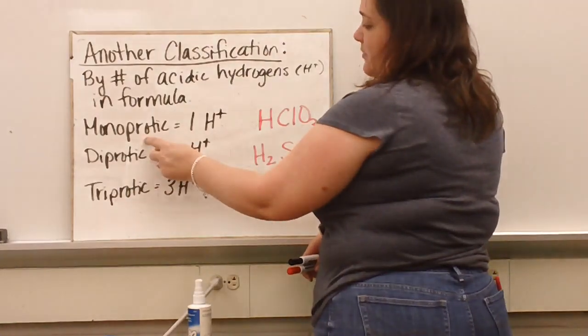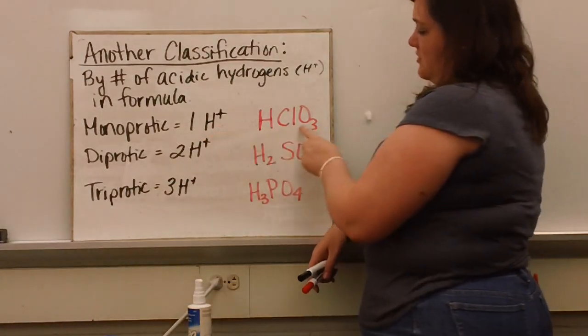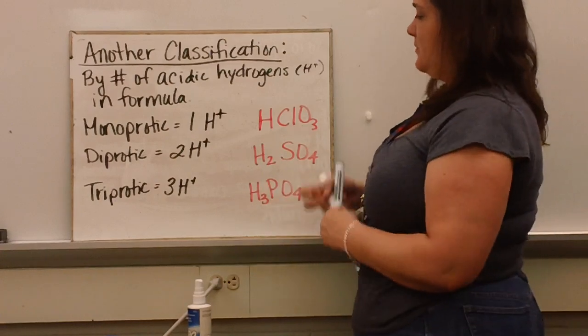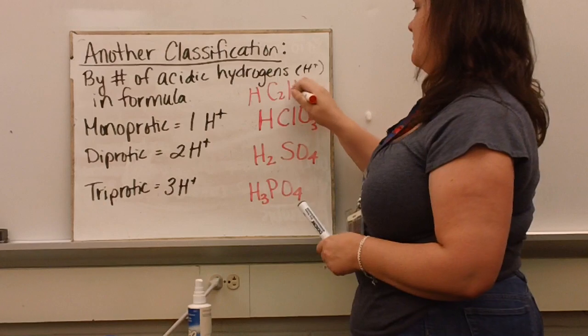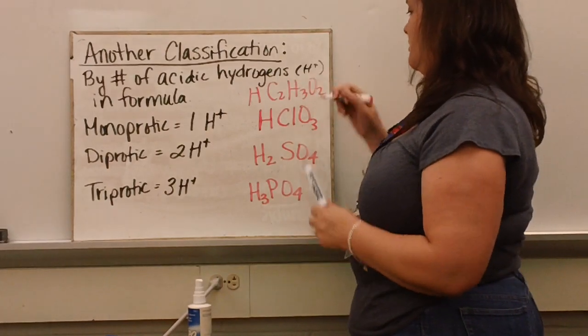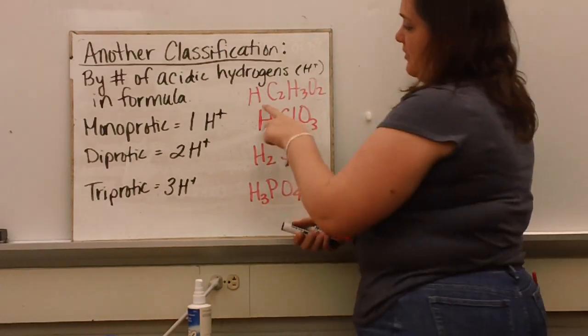So if you are a monoprotic, that means you have one acidic hydrogen, such as chloric acid. Also, as I was just talking about, acetic acid also would be a monoprotic acid.